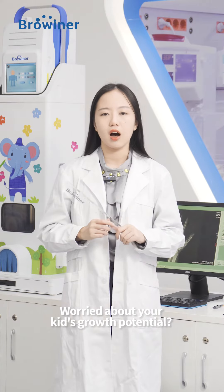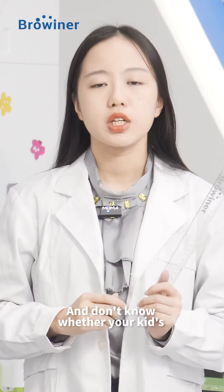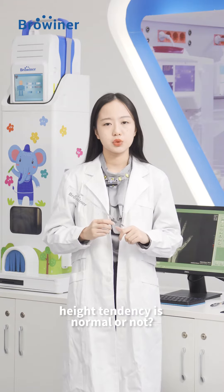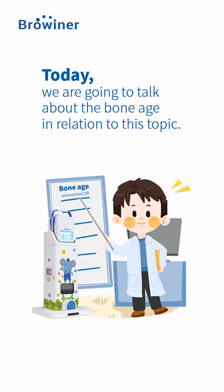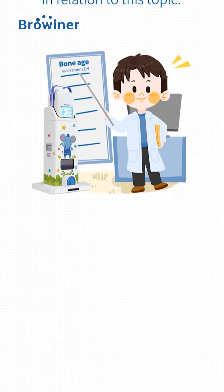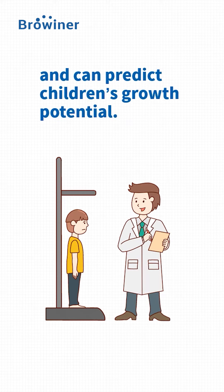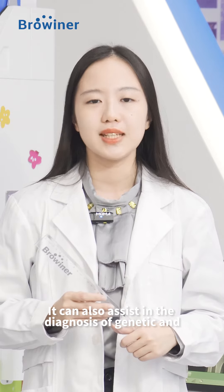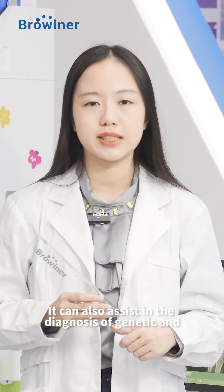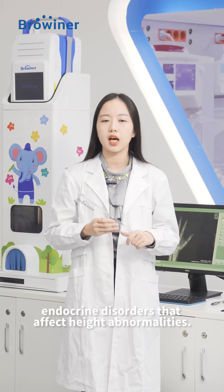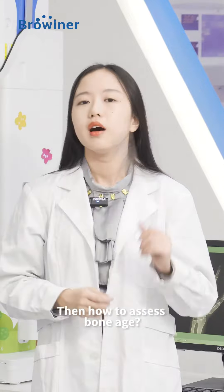Worried about a child's growth potential and don't know whether a kid's height anomaly is normal or not? Today we are going to talk about bone age in relation to this topic. Bone age is the age of the skeleton, determined by the degree of bone development, and can predict children's growth potential. It can also assist in the diagnosis of genetic and endocrine disorders that affect height abnormalities.